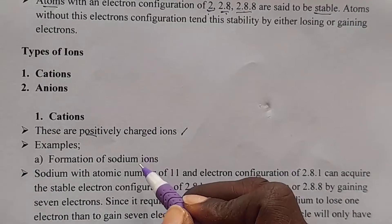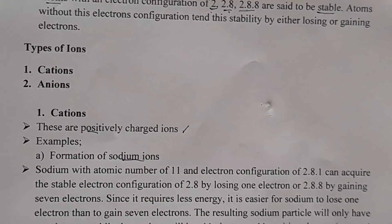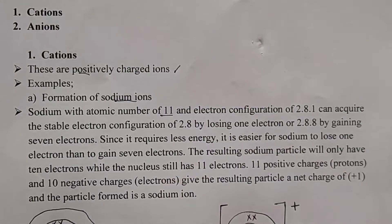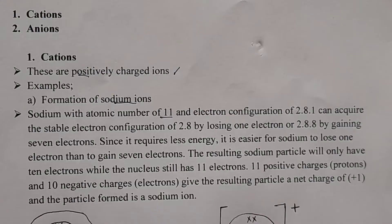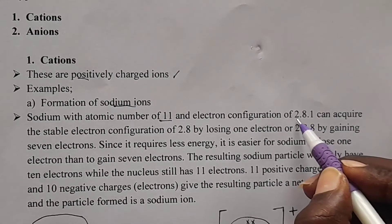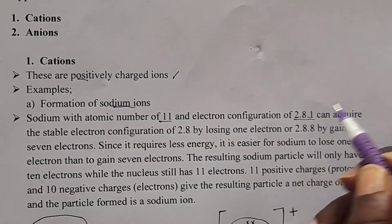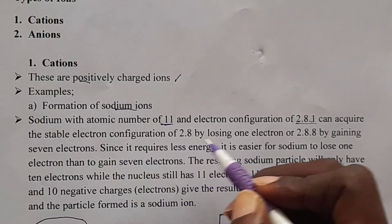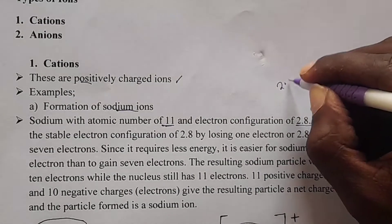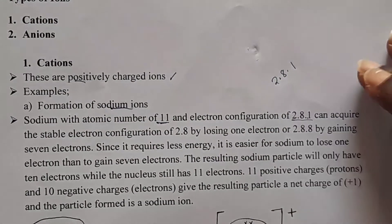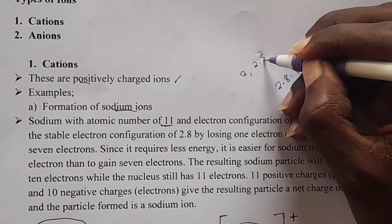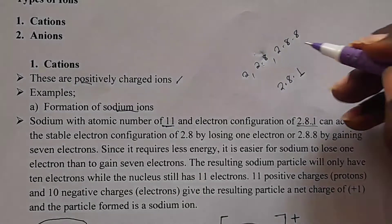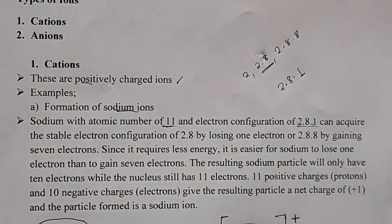As an example, we have the formation of sodium ion. Sodium has atomic number 11 — it is number 11 in the first 20 elements of the periodic table — with an electron configuration of 2,8,1. If you add 2 plus 8 plus 1, this gives you 11. Sodium can acquire a stable electron configuration of 2,8 by losing one electron.